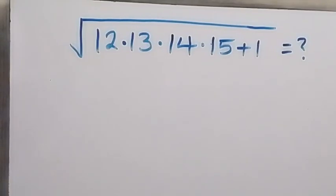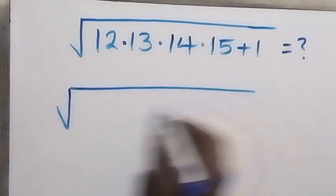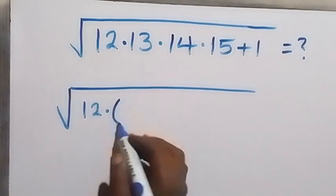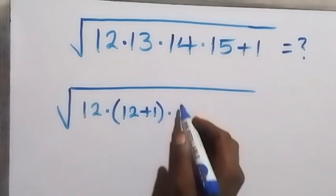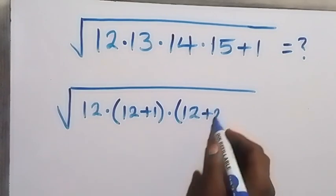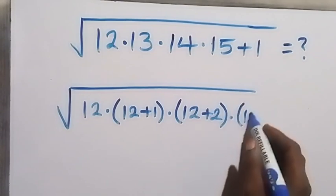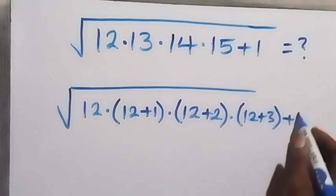Hello, you are welcome. How to solve this nice Olympiad problem. From here we can rewrite this as a square root of 12 multiplied by 13 multiplied by 14 — written as 12 plus 2 — then multiplied by 15 — also written as 12 plus 3 — then plus 1.